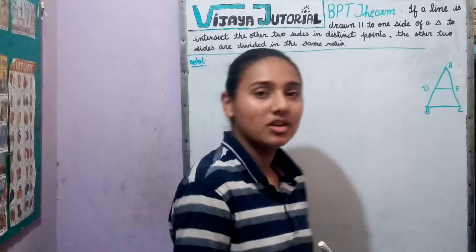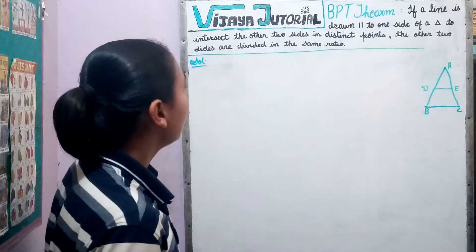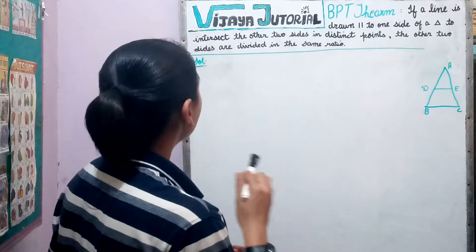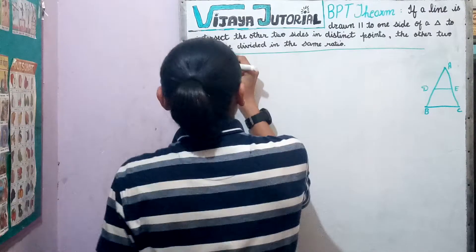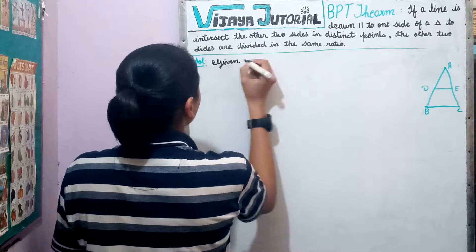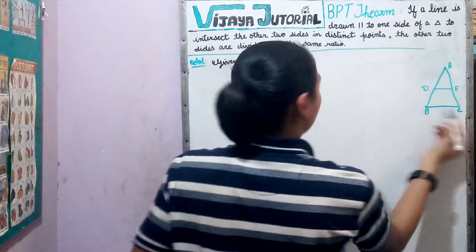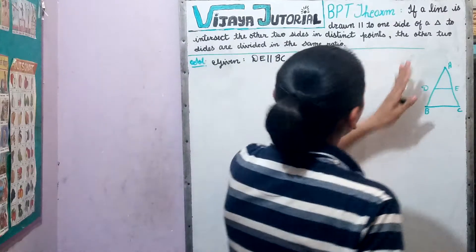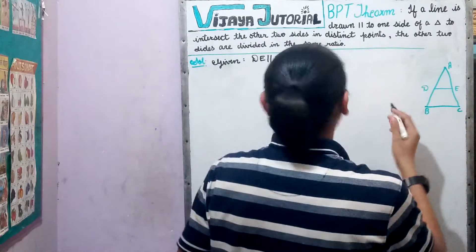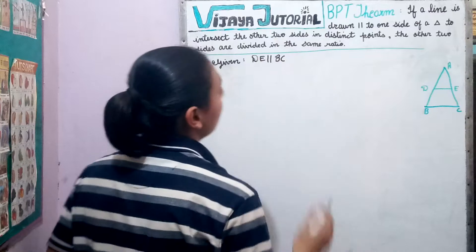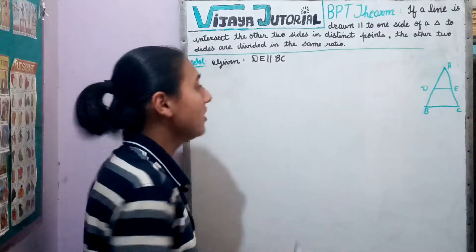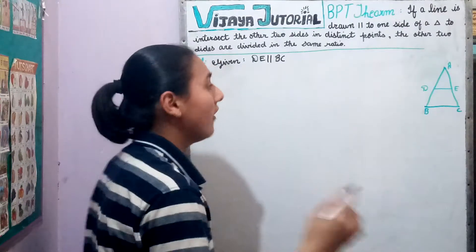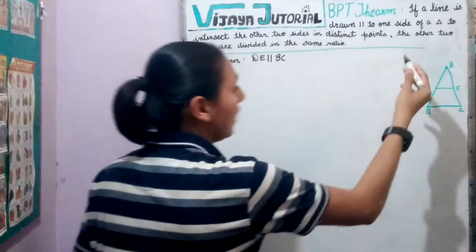Its full form is Basic Proportionality Theorem. This theorem says that if a line is drawn parallel to one side of a triangle to intersect the other two sides in distinct points, the other two sides are divided in the same ratio. We are given that DE is parallel to BC, and D and E are any two distinct points on side AB and AC respectively. We have to prove that AD upon DB is equal to AE upon EC.